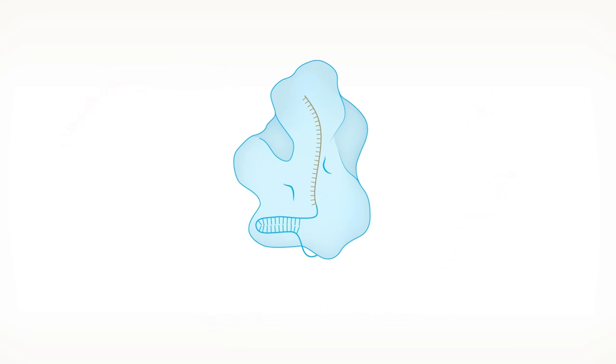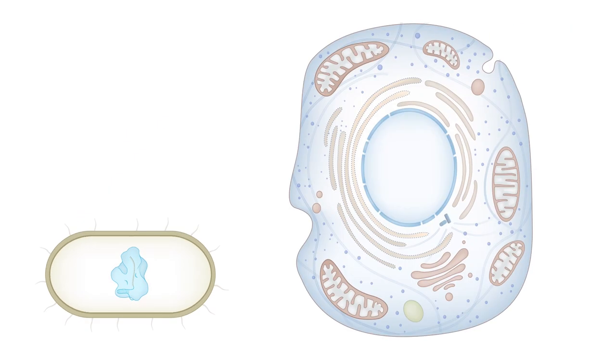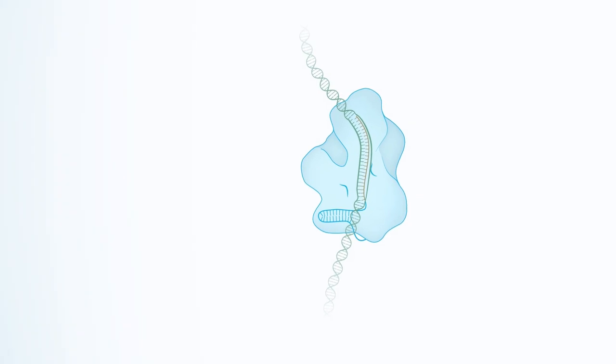However, CRISPR-Cas not only cuts viral RNA strands, but also works in the nucleus of eukaryotic cells to cut DNA strands. Following this discovery, scientists realized the great potential of CRISPR-Cas in genetic engineering.